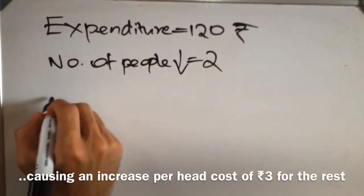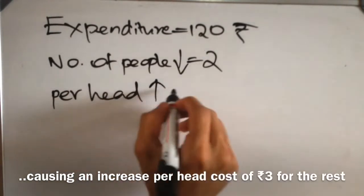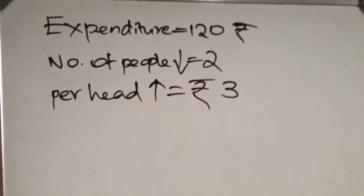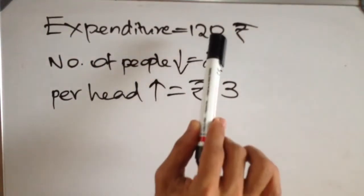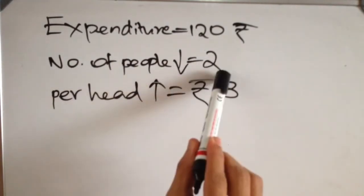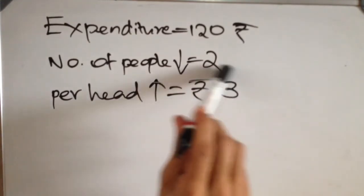And as a result, the remaining had to contribute an extra 3 rupees. So we have expenditure of the trip is equal to 120 rupees, two people did not turn up, and the remaining had to contribute an extra 3 rupees.